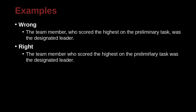'The team member who scored highest on the preliminary task was the designated leader.' The incorrect version has a comma after 'participant.' If we cut out that clause, can the sentence keep the same meaning? The answer is no — 'On the preliminary task was the designated leader' or 'The team member was the designated leader' loses critical information. It cannot be separated that way, as it is all very clearly the same idea. So no comma.